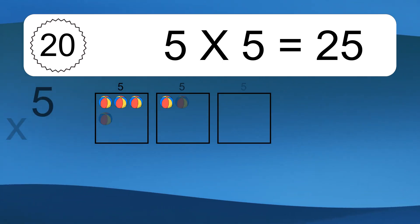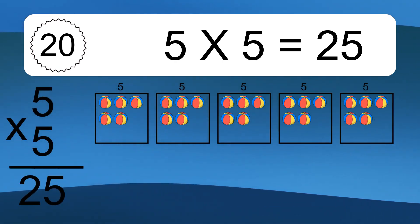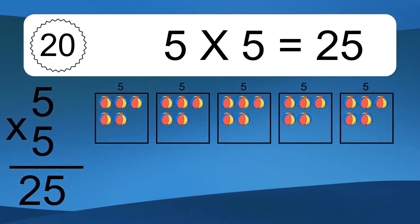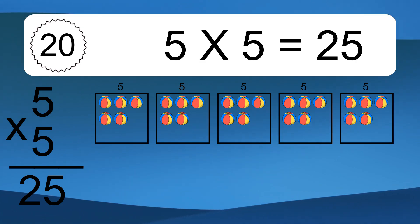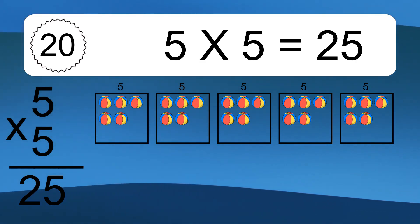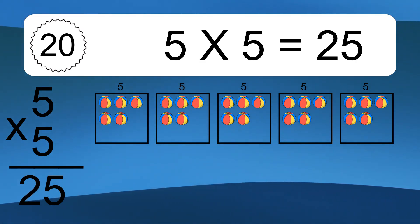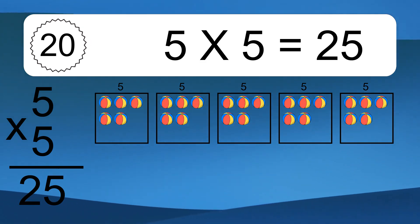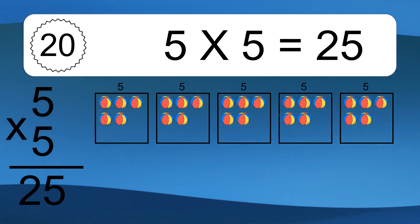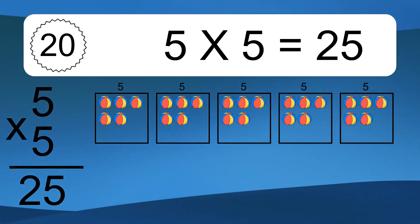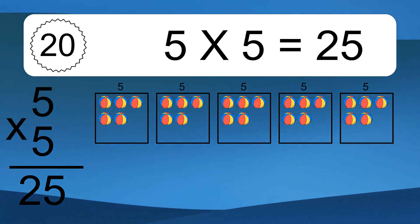5 times 5 equals what? 5 times 5 equals 25. We have 5 boxes and each box has 5 colorful balls inside. If you count all the balls in all the boxes together, you will have 5 times 5 balls. This equals 25 balls.